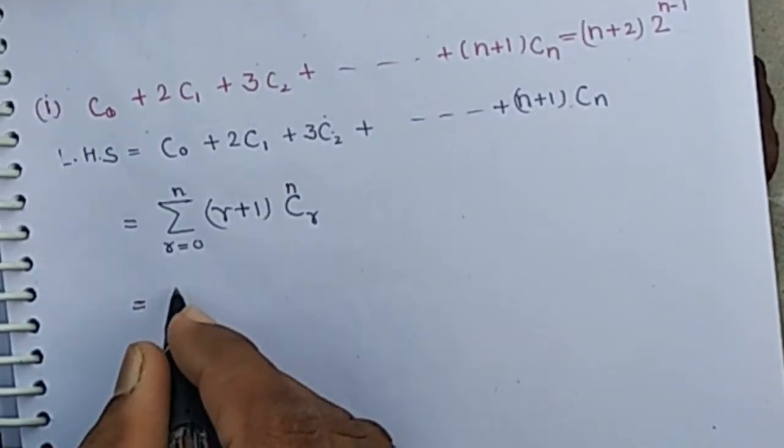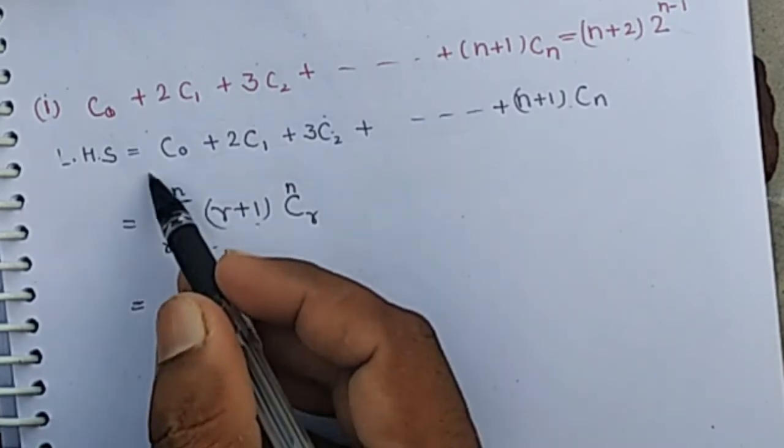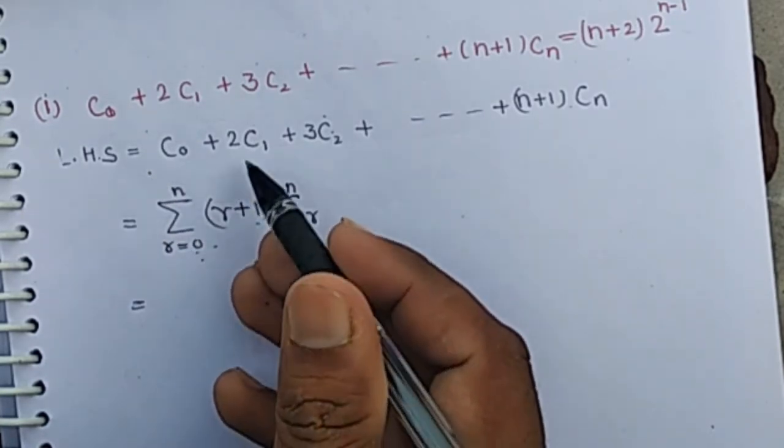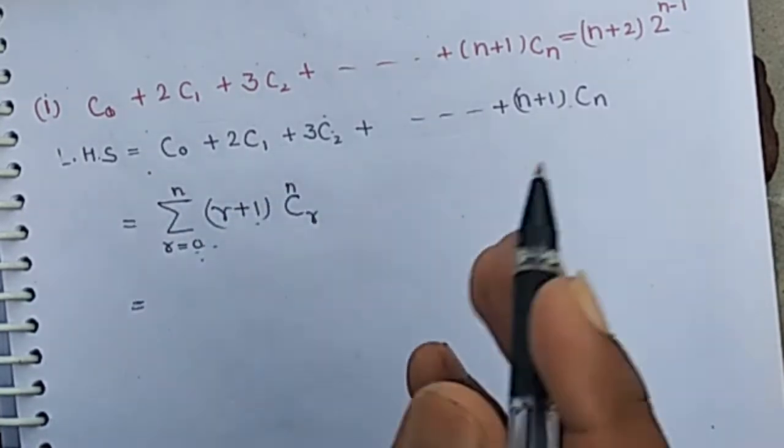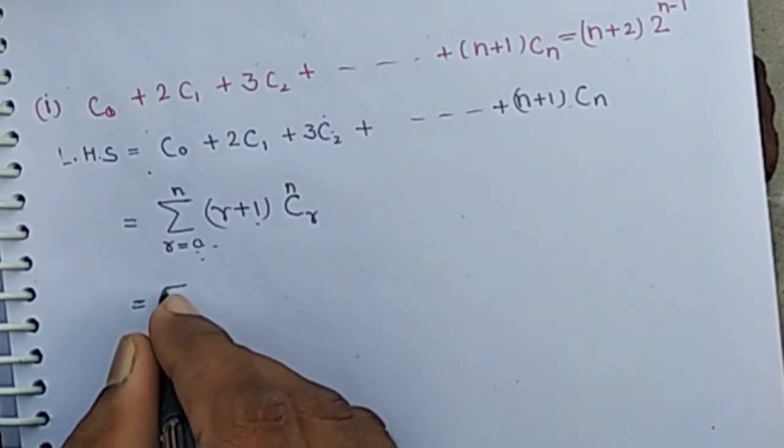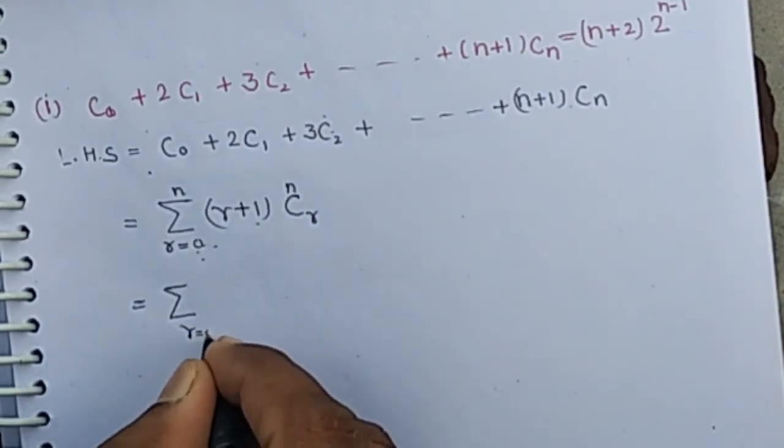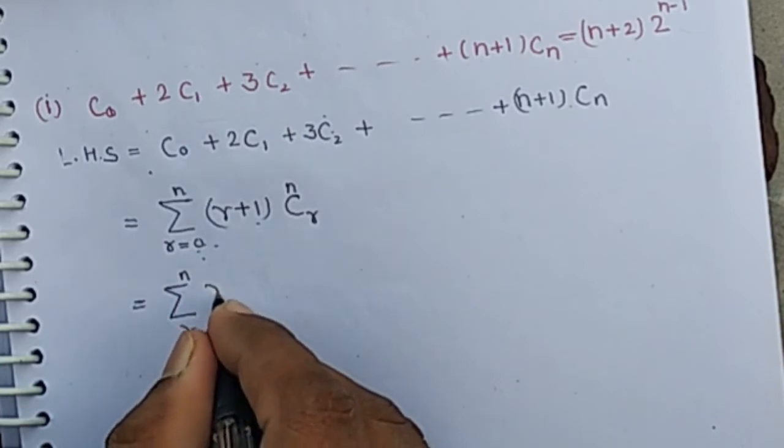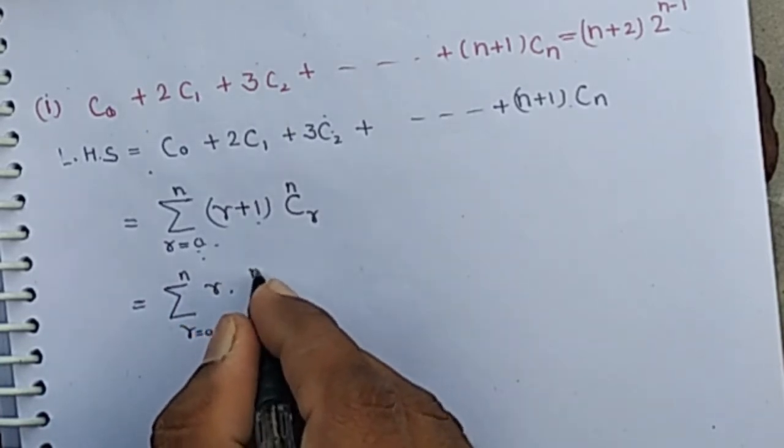Now open the bracket. If you put r equals 0 we get the first term, r equals 1 second term, r equals 2 third term and so on. We have the sum from r equals 0 to n of r times nCr.